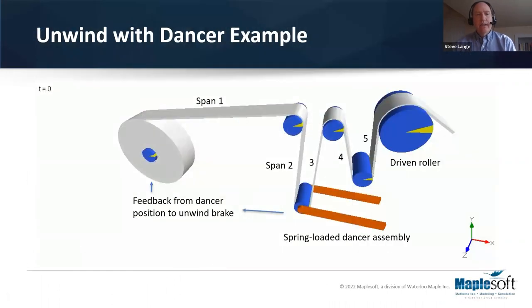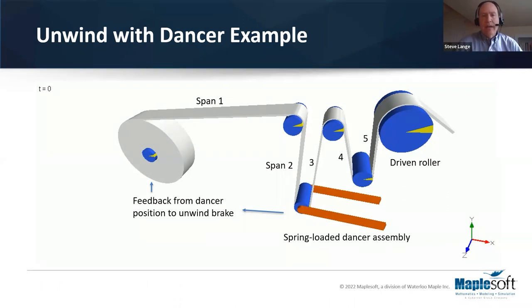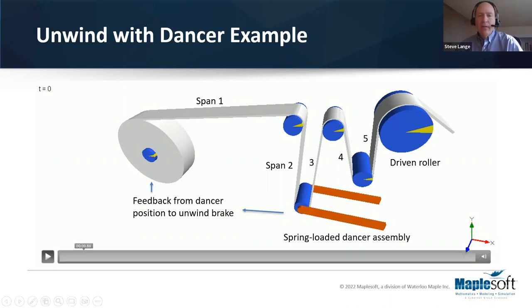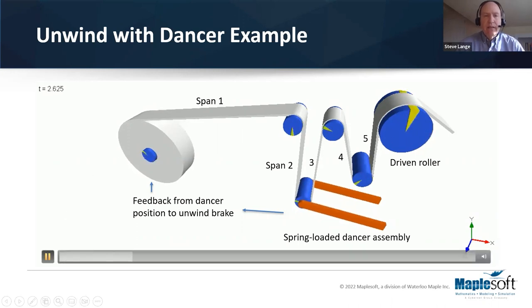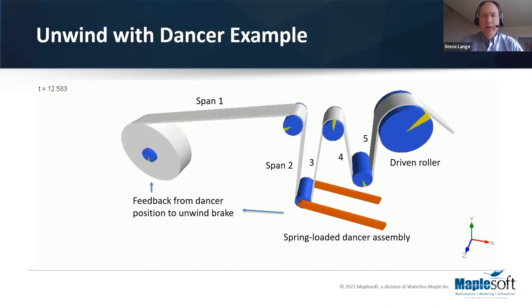As a simple example of what you can do with this library, this is one of the outputs of a simulation in MapleSim: an animation of a system. In this case, we have an unwind, a spring-loaded dancer arm, a few idlers, and one driven roller — a very simple five-span system. There is feedback of the dancer arm position to the motor, and you can see the web unwinding and flowing through the process.